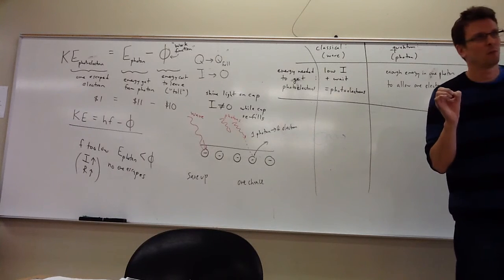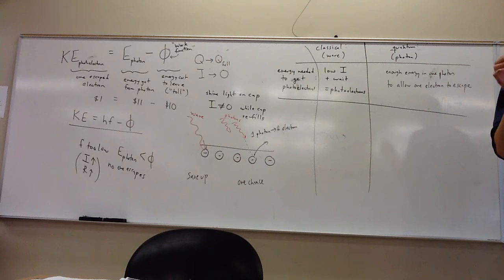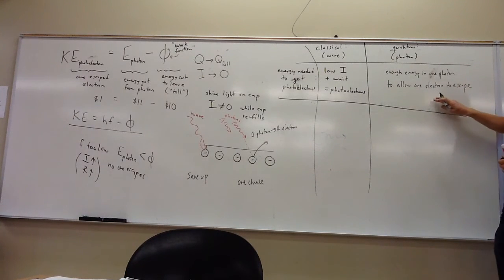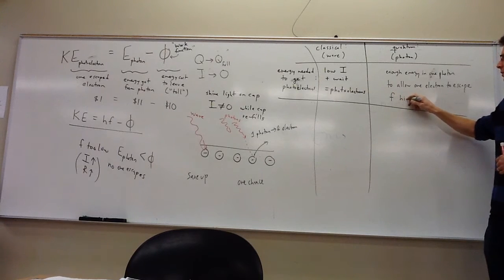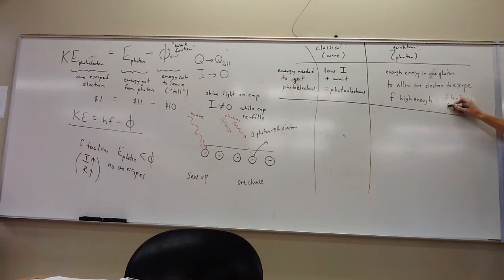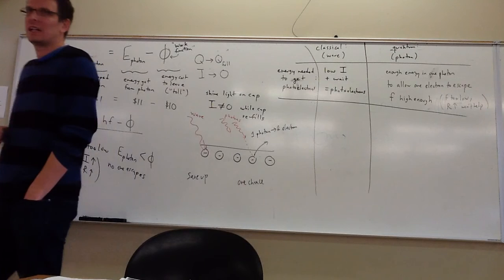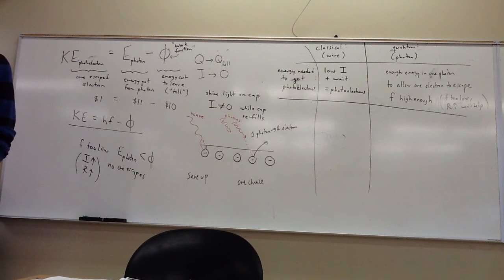If one red photon can't get anything to escape, then a million red photons can't get anything to escape. So if the frequency is too low, you can increase the intensity — which just increases the rate of delivery — but you still get nothing. Maybe instead of making the red light brighter, you should switch from red to violet light, so you get these bigger wrecking balls that have a larger energy.